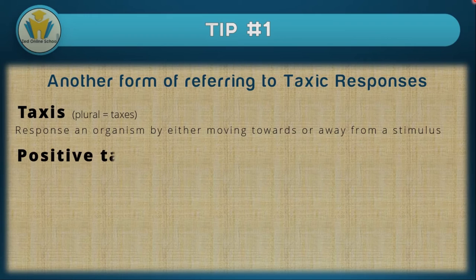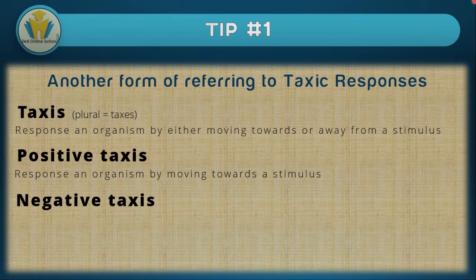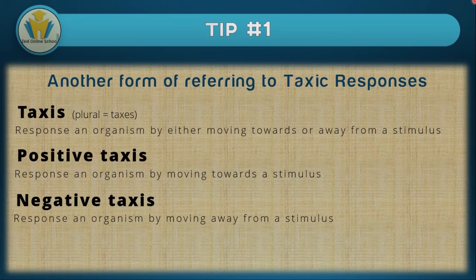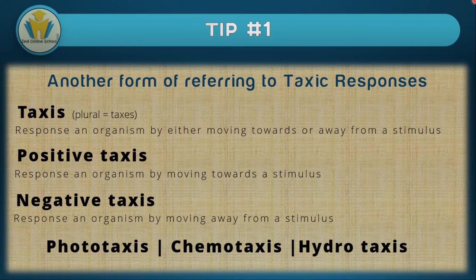You should be able to relate that positive taxis is the response towards a stimulus, and negative taxis is the response away from a stimulus. You should also be able to change each type of taxis response name accordingly — for example, phototaxism becomes phototaxis, chemotaxism becomes chemotaxis, and hydrotaxism becomes hydrotaxis. These types may also be referred to as phototactic responses, chemotactic responses, and hydrotactic responses.